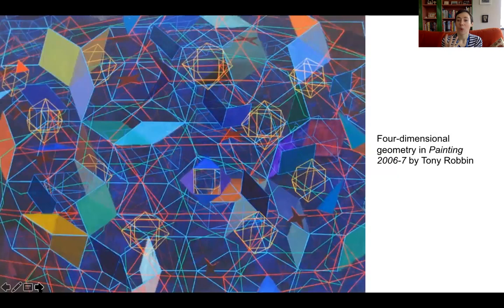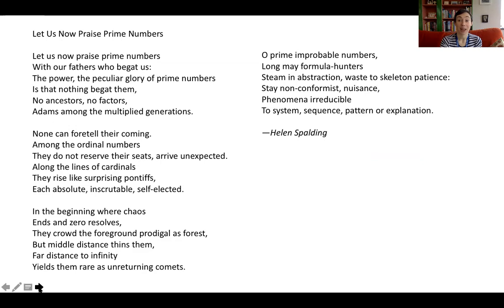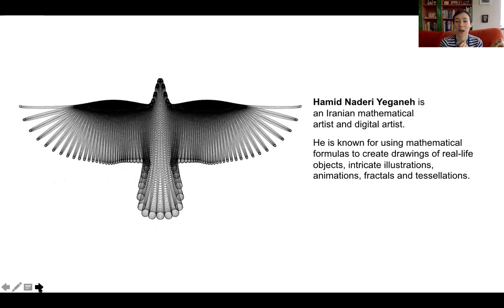This is somebody attempting to show four-dimensional geometry in a two-dimensional form — how do you explain four dimensions in 2D? This is by Tony Robin. And here is a poem by Helen Spalding, of which I'll read the last stanza: 'Oh prime, improbable numbers, long may formula hunters steam in abstraction's waste — skeleton patients, stay non-conformist, nuisance phenomena, irreducible to system, sequence, pattern, or explanation.' Prime numbers really resist formulas. There's still mystery around them, and we don't think of there being mystery in mathematics, but actually there is — there's mystery in art and mystery in maths as well.